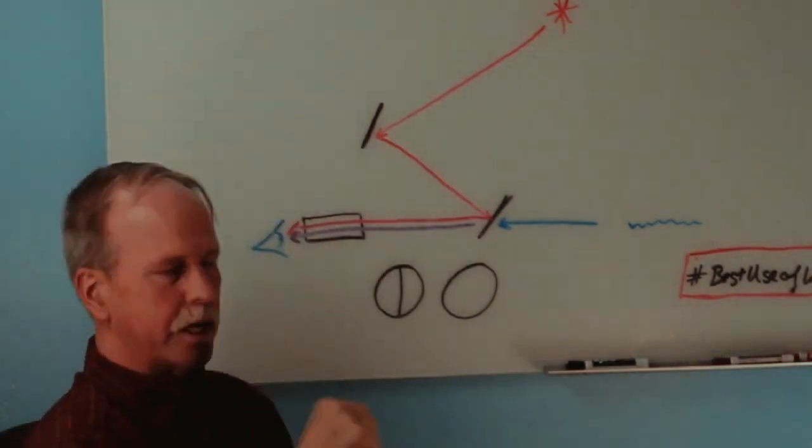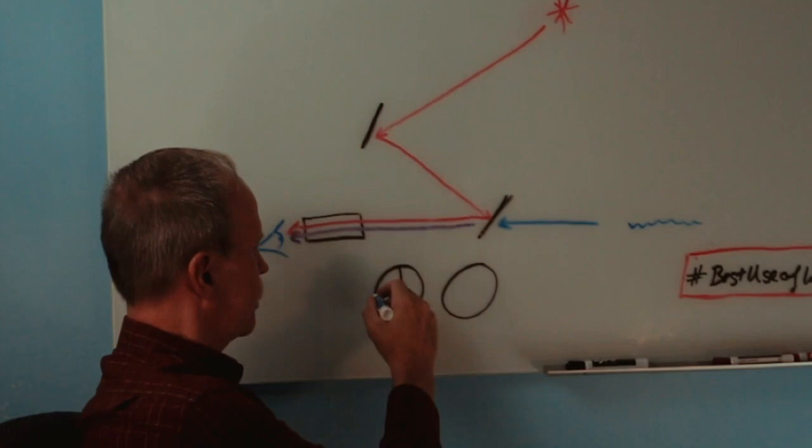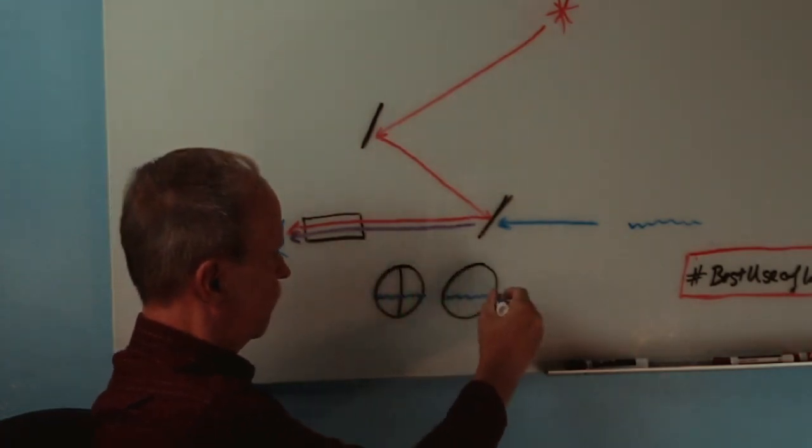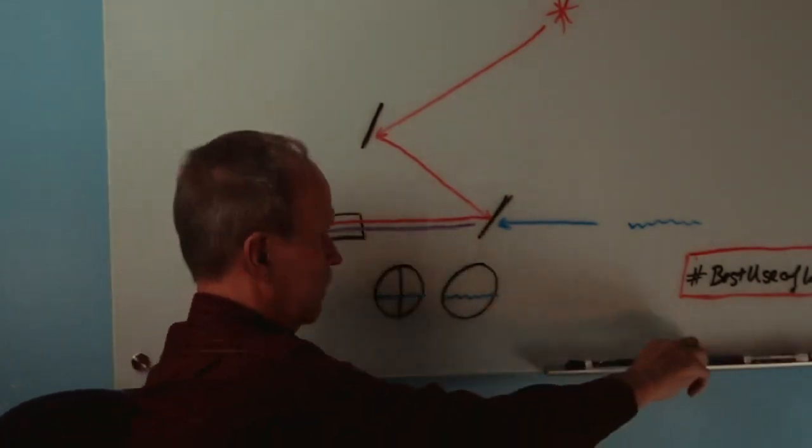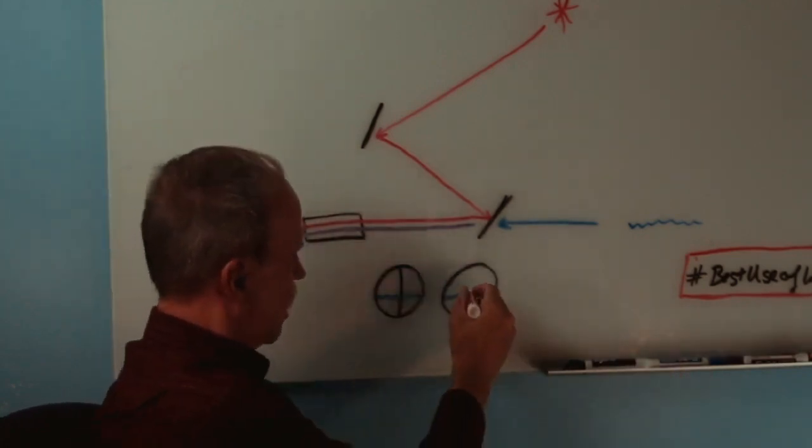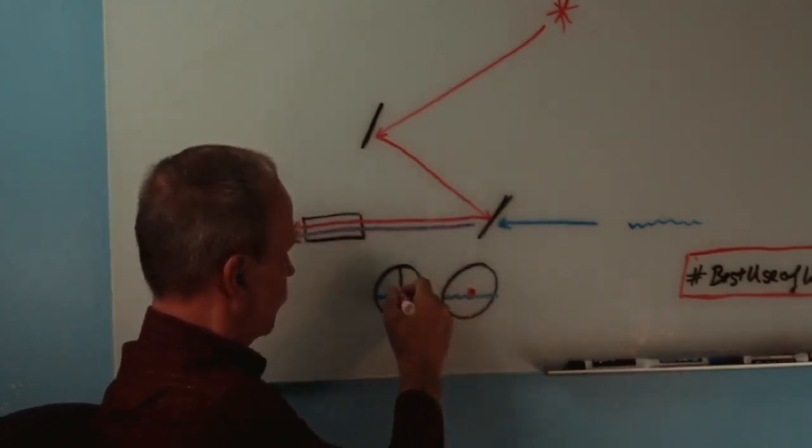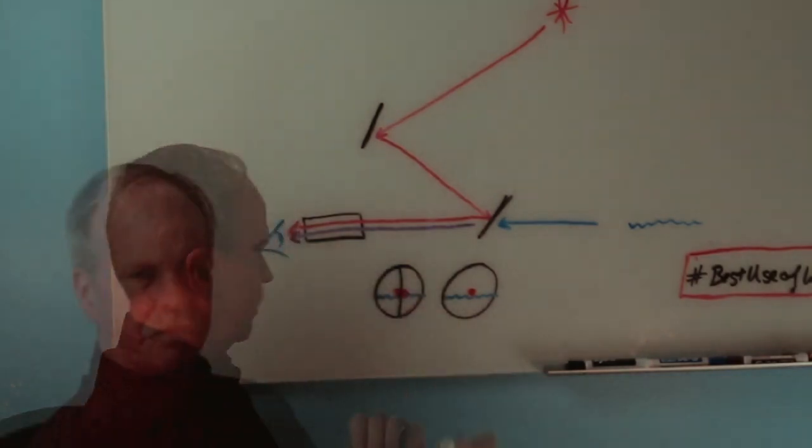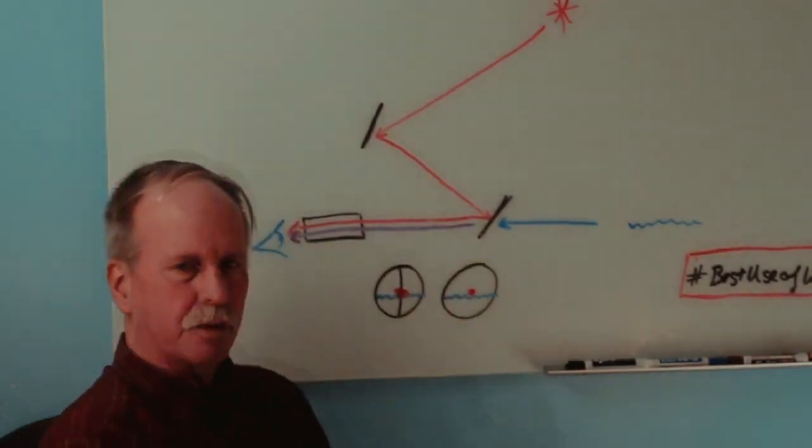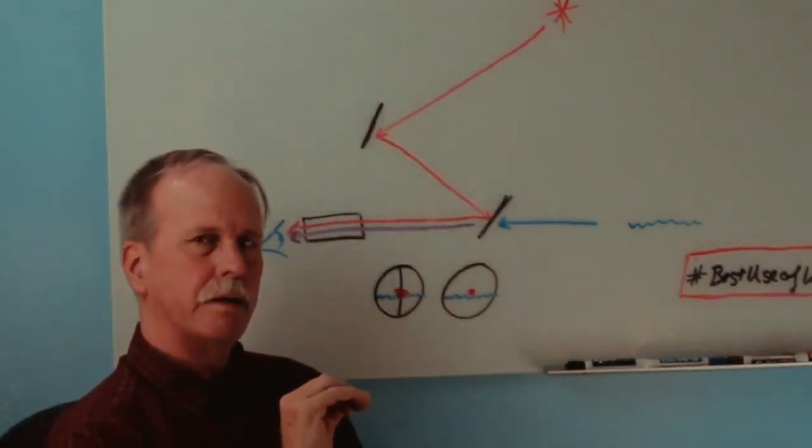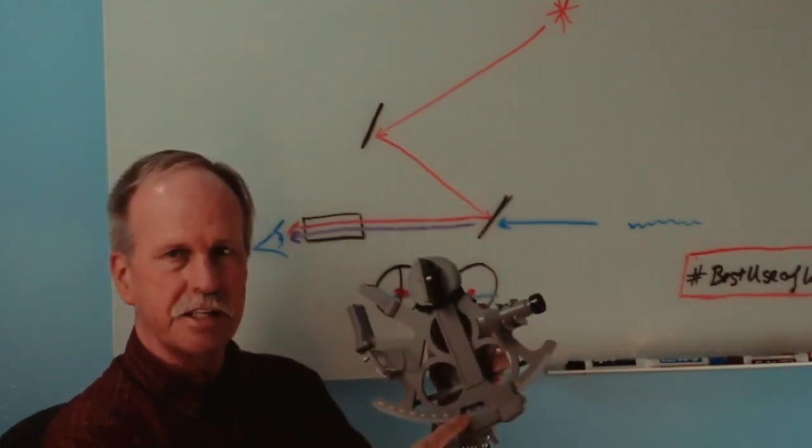Now, when this is set up correctly, what we will do is we will see the ocean. And then we will see the star right on the horizon. That means we have this angle correct. So then to get our reading, what we do is we simply read off the angle on the sextant.